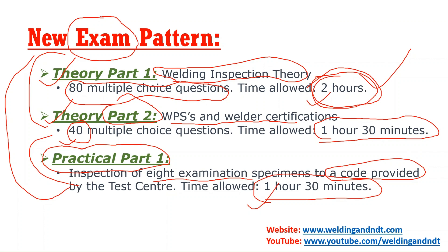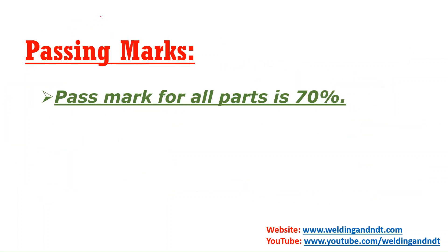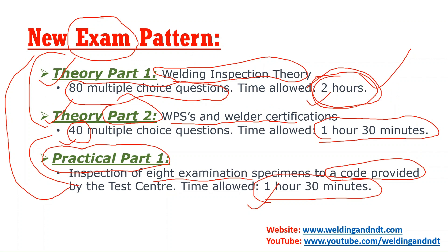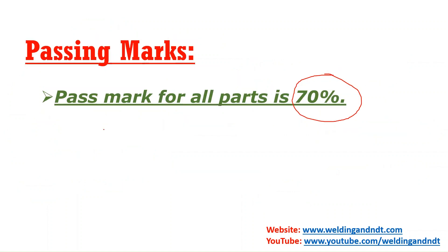The number of papers has been reduced compared to the old pattern, which is a good sign. The passing mark is 70%, and you must achieve 70% in each individual part — Theory Part 1, Theory Part 2, and Practical Part 1 all require a minimum of 70% to pass.